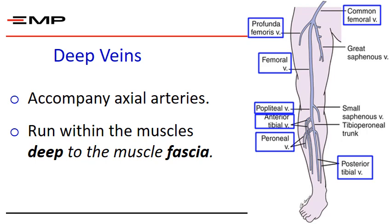The deep venous system drains the deep tissues of the foot and muscles of the lower leg and thigh. These deep veins lie within the mass of the lower limb muscles and include the large soleal venous sinuses. When muscles contract during walking and other exercises, this will pump the blood back towards the heart against gravity. This is what we call the muscle pump. Reversal of blood flow is prevented by the valves in the deep system.